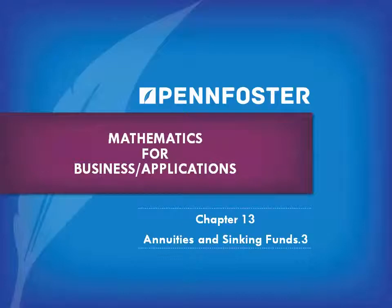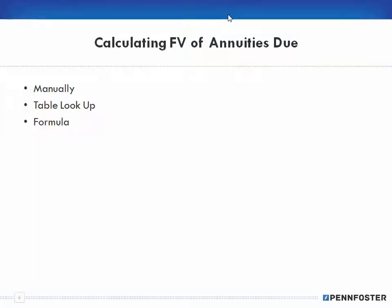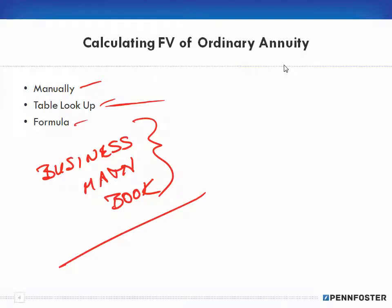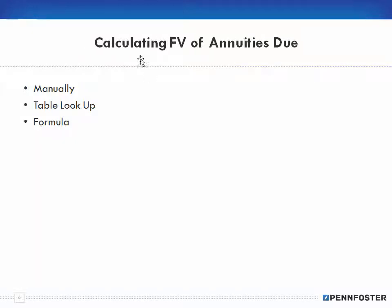Welcome back to math for business and finance and math applications. We're continuing with Chapter 13 on annuities and sinking funds. In the previous video we ended with calculating the future value of an ordinary annuity, which is similar to calculating the future value of a lump sum — you know the payment, look up the factor for number of periods and interest, then multiply.